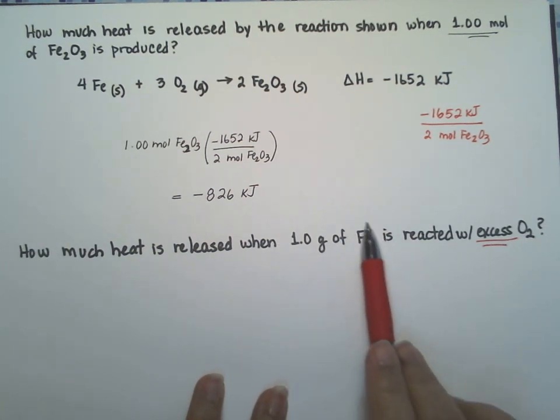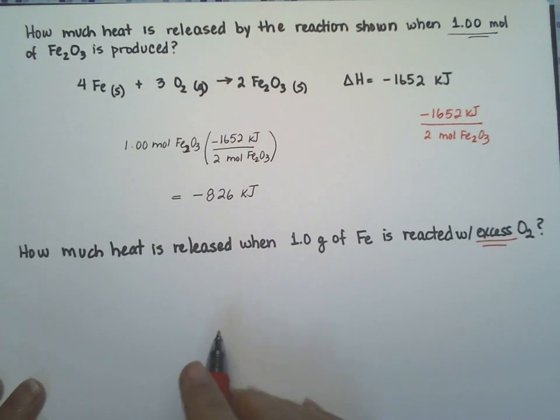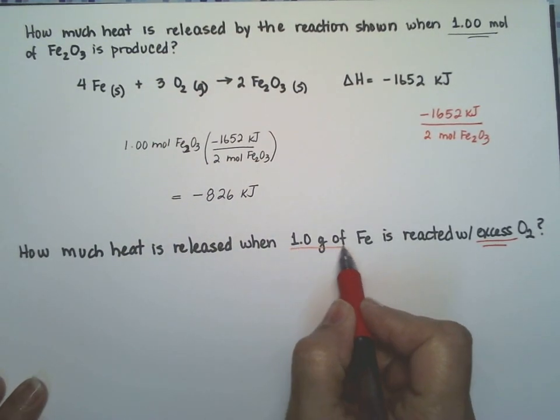That means that the one gram, you can assume the one gram is going to be your limiting reagent. Let's calculate how many moles are in a gram of iron.